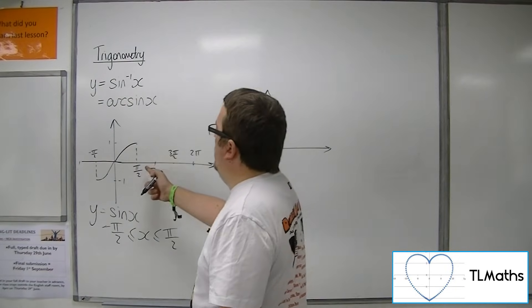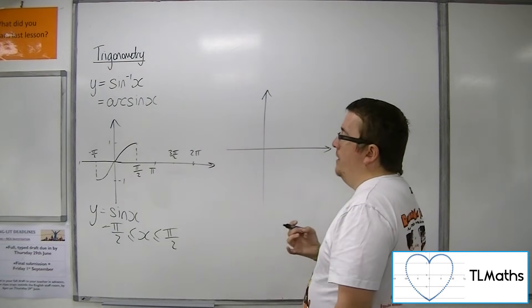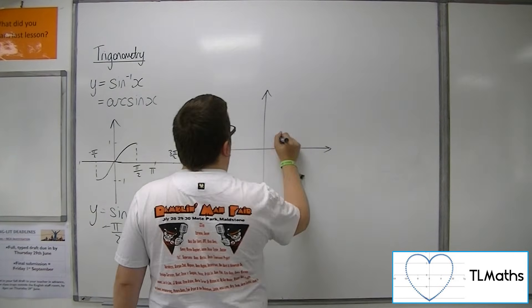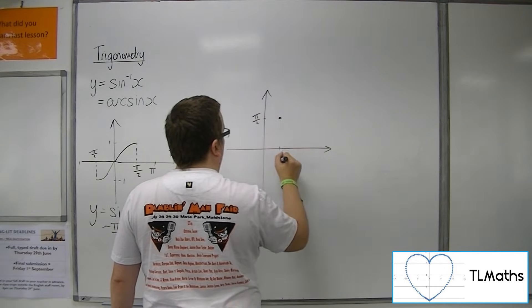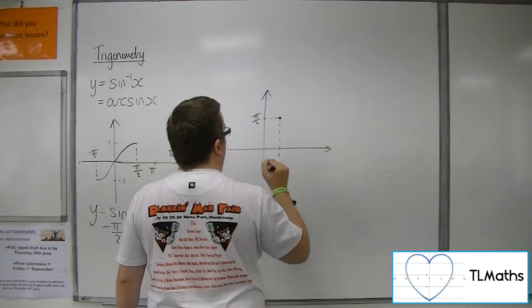So pi over 2, 1 will become 1, pi over 2. So 1, pi over 2, like so.